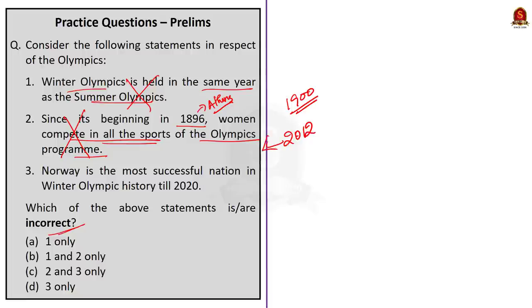Moving on to the third statement. Norway is the most successful nation in Winter Olympic history till 2020. This statement is correct. Norway is the most successful nation in Winter Olympic history till now. It has a total of 368 medals in gold, silver and bronze. This may change after the 2022 Winter Olympics. So, stay updated. Since they are asking the incorrect statements here, the correct answer here is option B, one and two only.